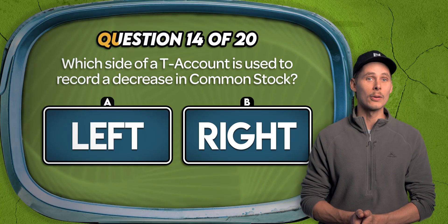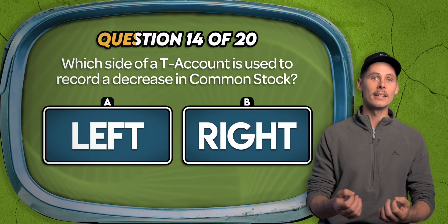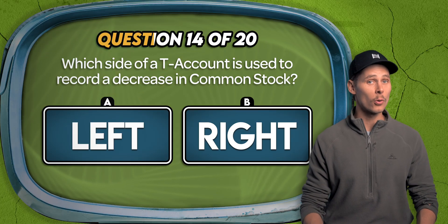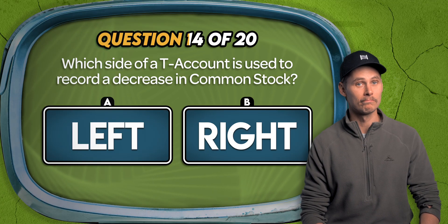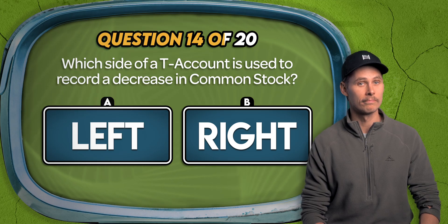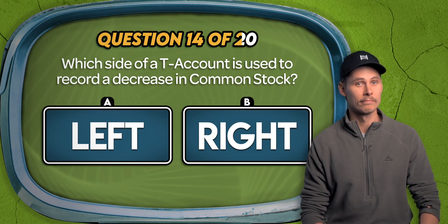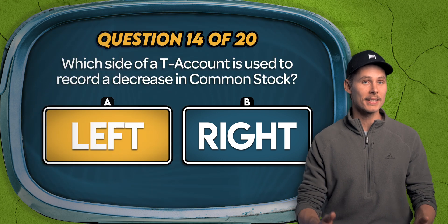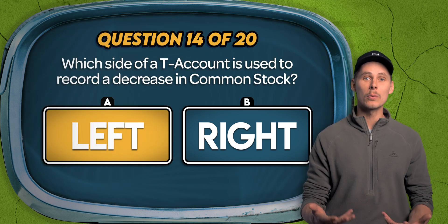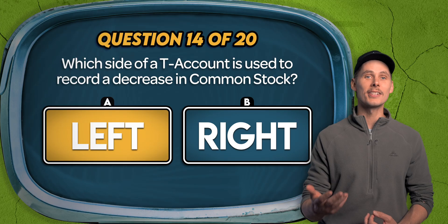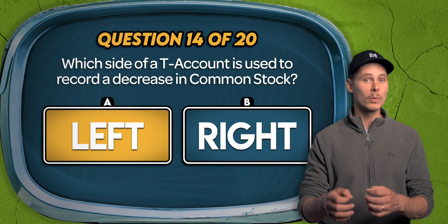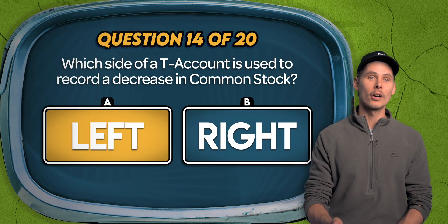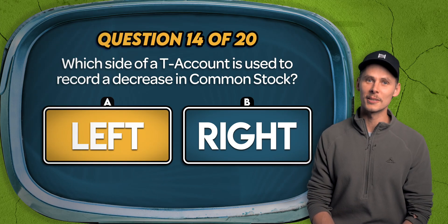Question 14. Which side of a T-account is used to record a decrease in common stock? The left or the right? It's A. Common stock is an equity account represented by the second E in DEALER. So it's a normal credit account — this means we'd debit common stock on the left side of the T-account to decrease it.